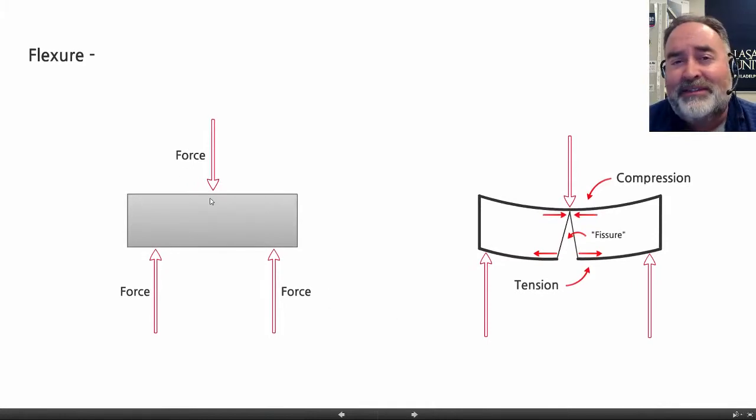And then here's flexure. Again, this is the iPhone test. This is the flexure we saw with the airplane with the Boeing 777 wing. We're going to have two forces on the bottom, one force on the top, they're off axis. And what happens is one side, the top side, as it bends, actually is under compression - it actually gets smaller.